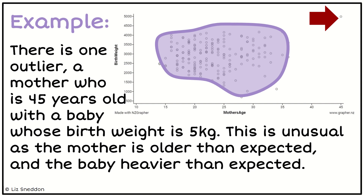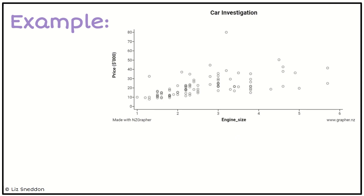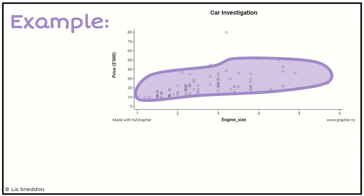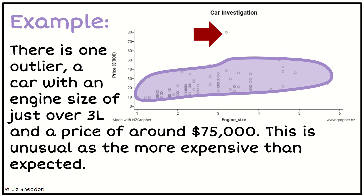Let's have a look at a second example. This one looks at cars — specifically engine size in liters versus price. I'll draw a blob around most of the data, but notice I haven't drawn it around the point at the top, because that's quite a way away from the pattern. That's the outlier: a car with an engine size just over three liters and a price of around $75,000–$80,000. It's unusual not because of the engine size, which is about average, but because it's much more expensive than we'd expect for a car with that engine size.